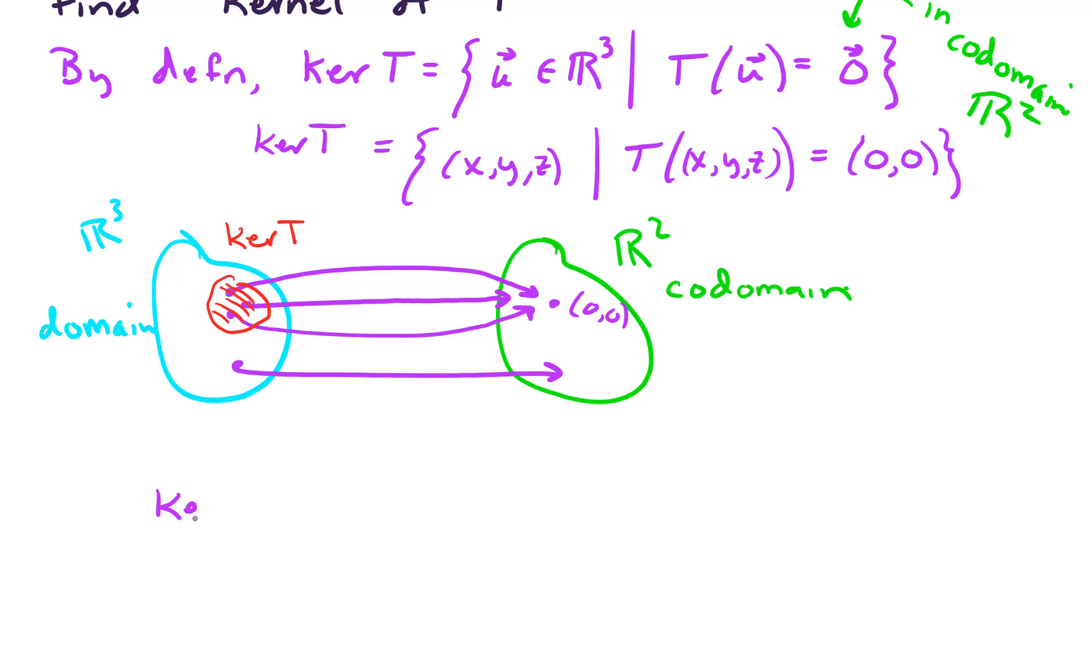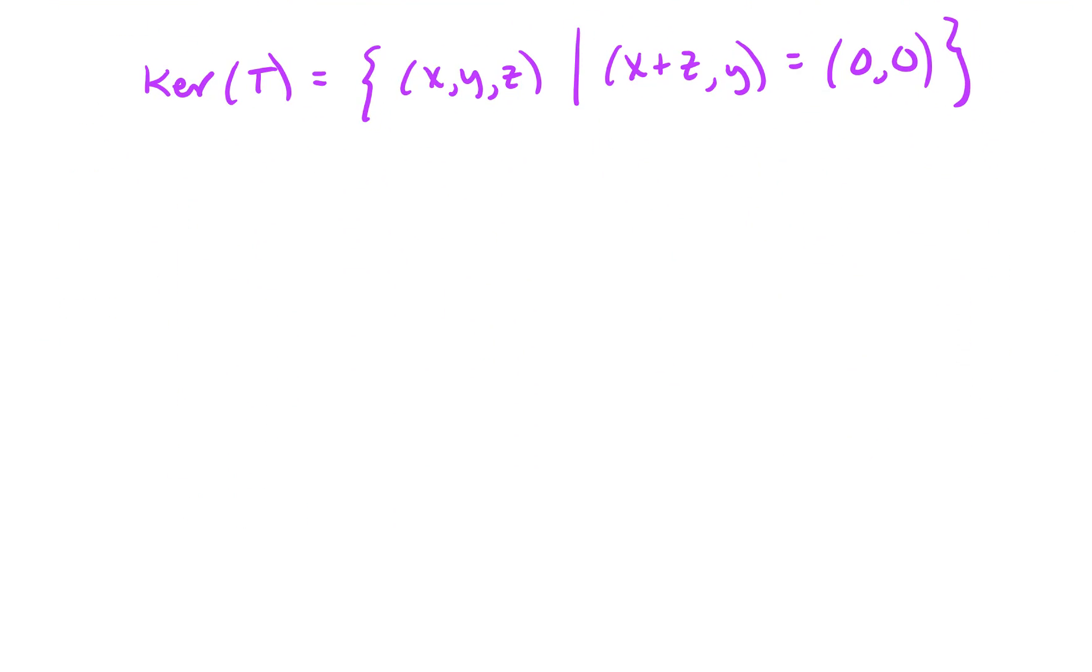So far we've deciphered that kernel of T is the set of vectors (x,y,z) such that T(x,y,z) is (0,0). T(x,y,z), the definition we remembered from above, is just x plus z comma y. So we get x plus z comma y, and that's supposed to equal the zero vector. So solving from here, this condition tells us that x plus z must equal zero. So that implies x equals negative z. And similarly, the second components must be equal, so y equals zero.